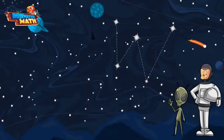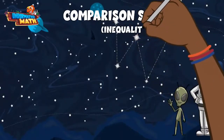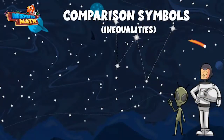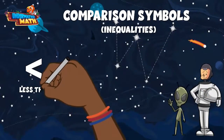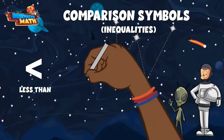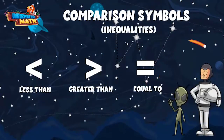When comparing numbers, we use comparison symbols. They are also known as inequality symbols. Comparison symbols are the signs such as less than, greater than, or equal to. We can use these symbols between numbers to tell us which one is greater or less than the other. Remember, the comparison symbol always opens up to the larger number.